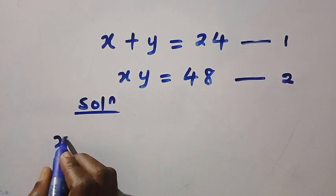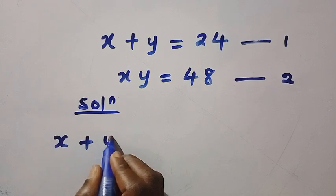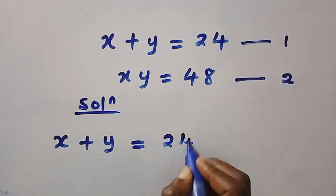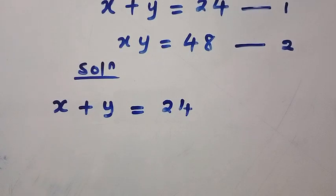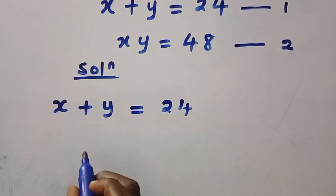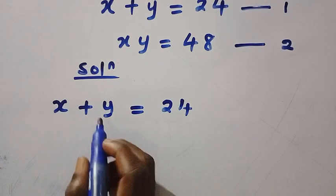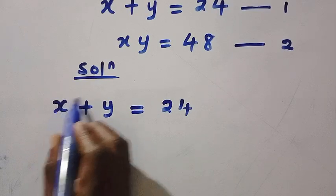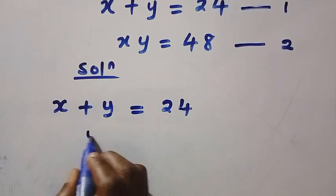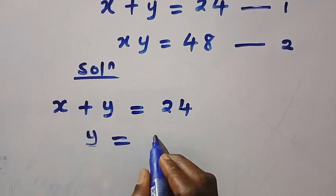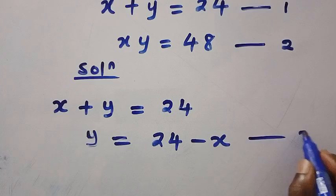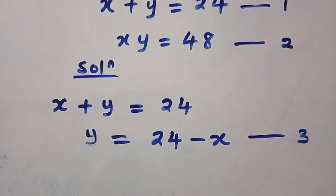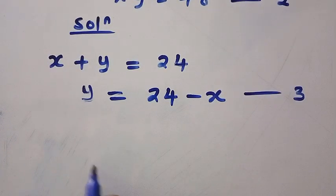We have X plus Y equals 24. I want to get X in this equation as the first solution. What I will do is take X to the other side, and here we have Y equals 24 minus X. This forms a new equation and I will call this equation 3.